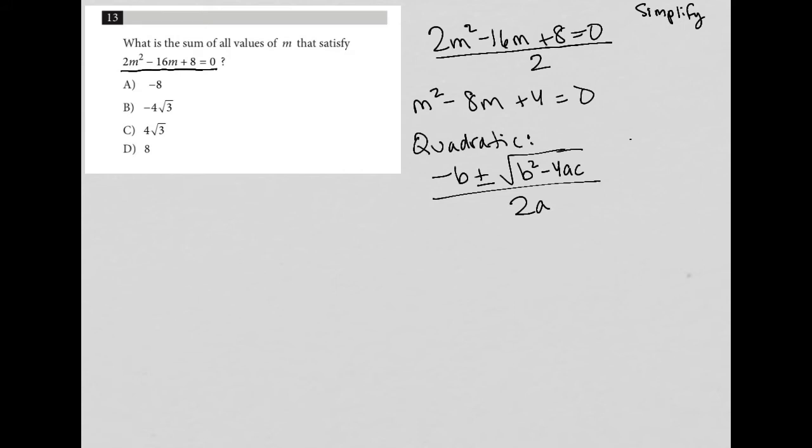In this case, a for us is 1, right? Because there's no number in front of the m squared. b is negative 8. And c is positive 4.